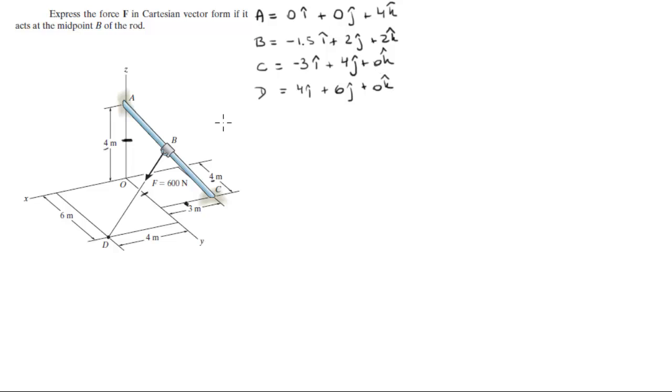So the force vector is aiming at the same line that goes from B to D. So we're going to need to find vector BD. Vector BD is position vector D minus position vector B.